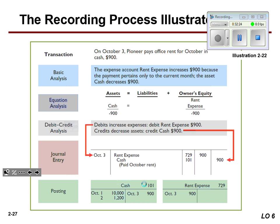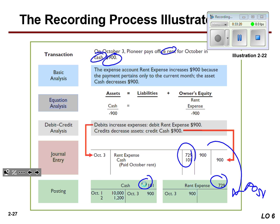On October 3rd, Pioneer pays $900 office rent for October in cash. Cash goes down — so that's a credit — and rent expense goes up, which offsets owner's equity as a debit. We'd write October 3rd as the date, debit rent expense, credit cash, add a brief explanation, then post both sides and bring the reference numbers back up.